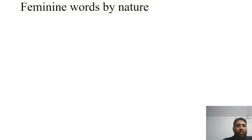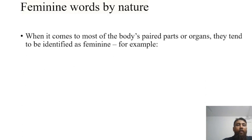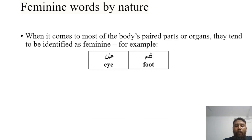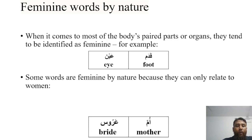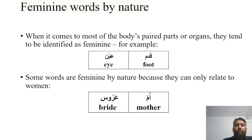The last topic in this lesson is feminine words by nature. When it comes to most paired body parts or organs, they tend to be identified as feminine. For example, 'foot' — a paired part of the human body — is kadam. Another example is 'eye' — a paired part of the human body — is ainun. Also, some words are feminine by nature because they can only relate to women. The first example is 'mother' — umun; and the second example is 'bride' — arus.